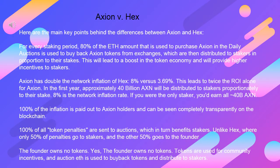Axion vs. HEX — here are the main key points behind the differences. For every staking period, 80% of the ETH amount used to purchase Axion in the daily auctions is used to buy back Axion tokens from exchanges, which are then distributed to stakers in proportion to their stakes. This will lead to a boost in the token economy and will provide higher incentives to stakers. Axion has doubled the network inflation of HEX — 8% versus 3.69% — leading to twice the ROI alone. In the first year, approximately 40 billion AXN will be distributed to stakers proportionately to their stake.